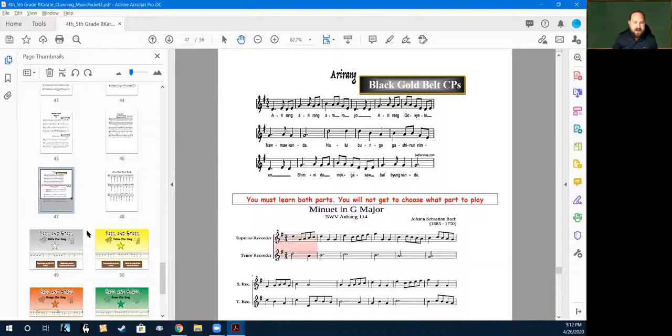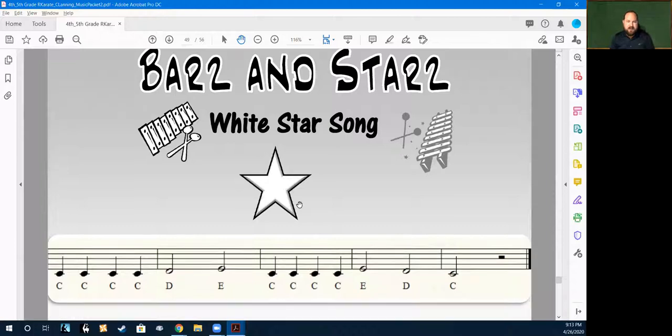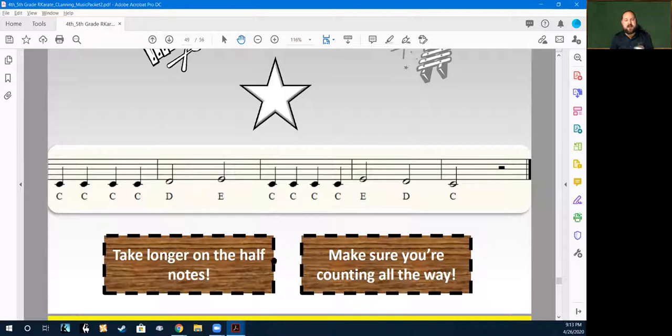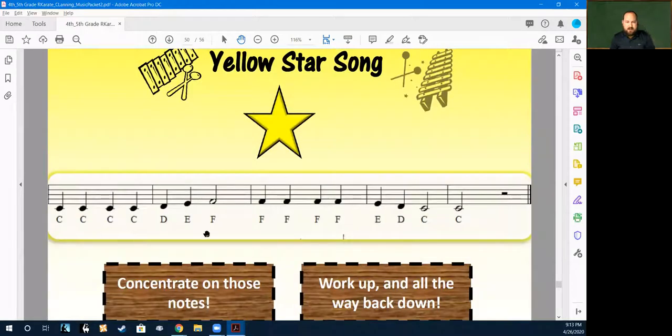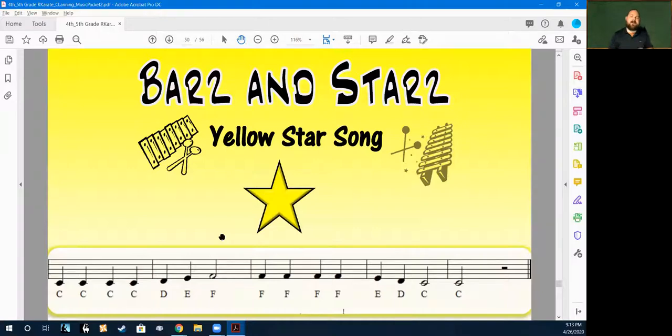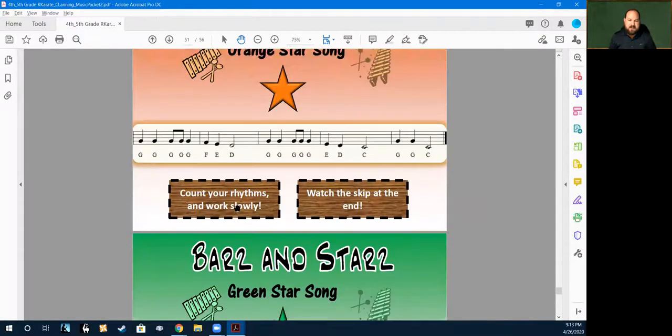In the last part of the packet, this is where I have the Orf karate pieces. I've given you the names of the notes because you're having to read music on the piano and it can be challenging at times. I've given you the names of the notes and then I've also given you some hints, so take longer on the half notes, make sure you're counting all the way, all of those things. Orf is really not just piano, it's going to be xylophones and any kind of bar instruments, so that's why this is called Bars and Stars. But I'm using it for piano instruction because I think it's accessible for you, and as you can see the pieces get harder.